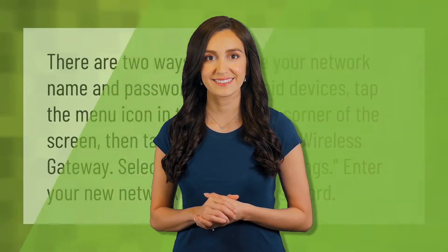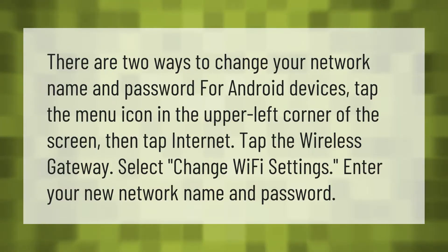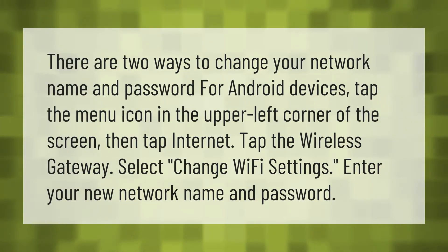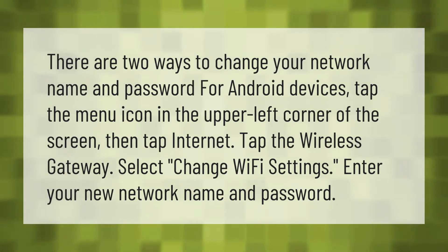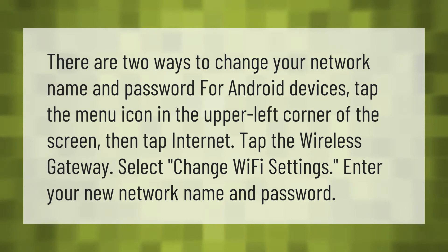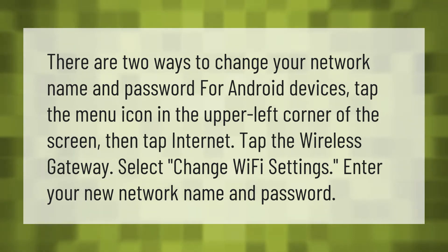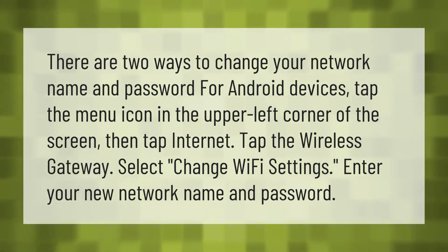There are two ways to change your network name and password for Android devices. Tap the menu icon in the upper left corner of the screen, then tap Internet. Tap the Wireless Gateway, select Change Wi-Fi Settings, and enter your new network name and password.